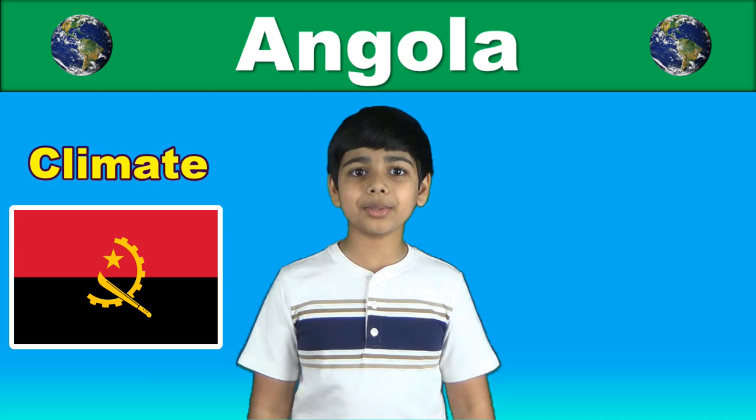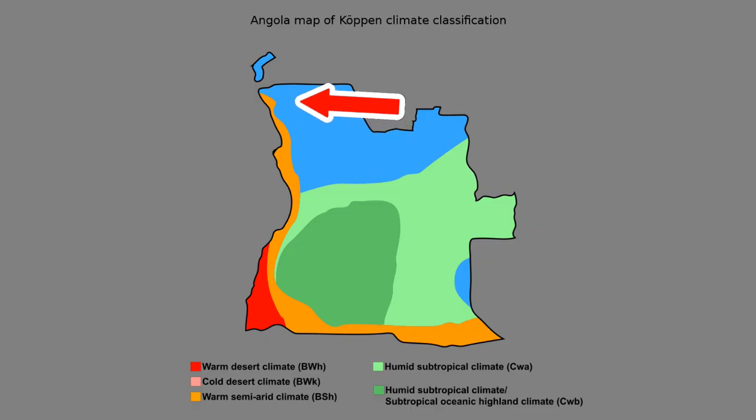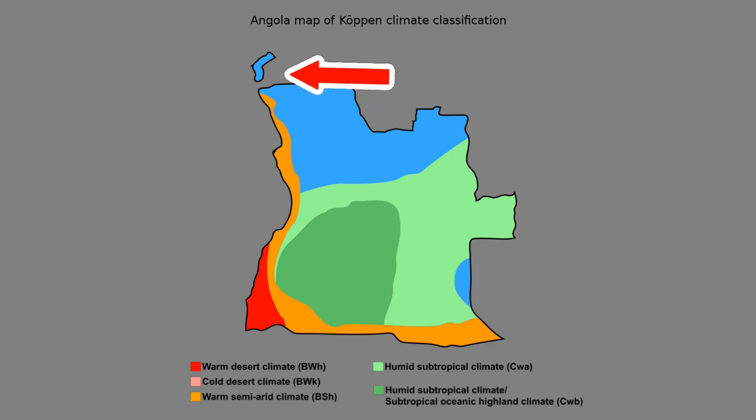The heaviest rainfall occurs in April and is accompanied by violent storms. The far north, including Kabinda, has the highest annual rainfall.